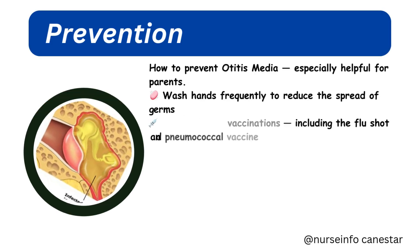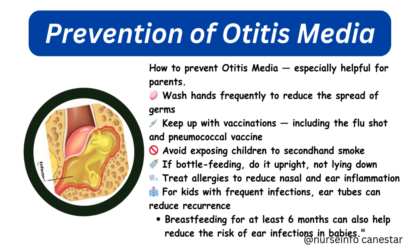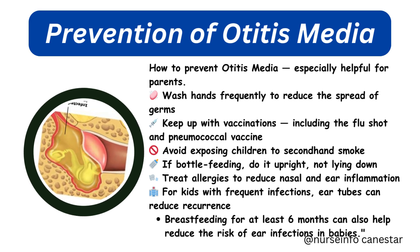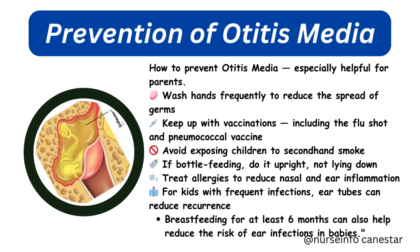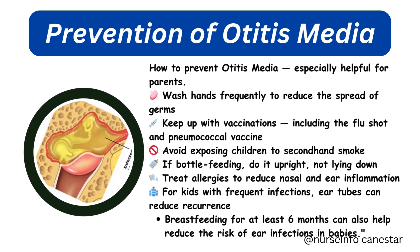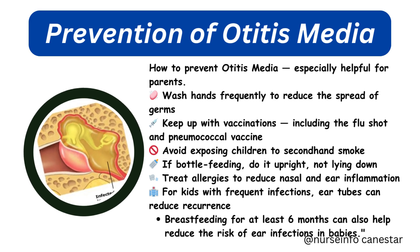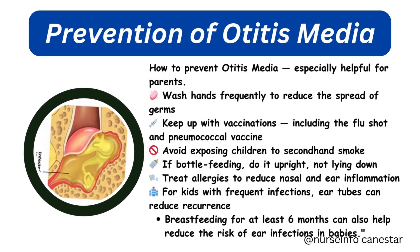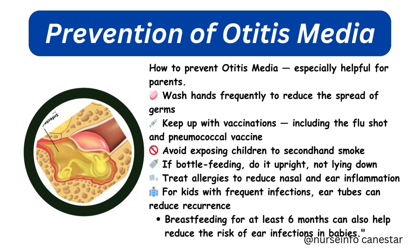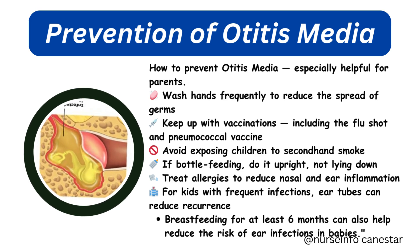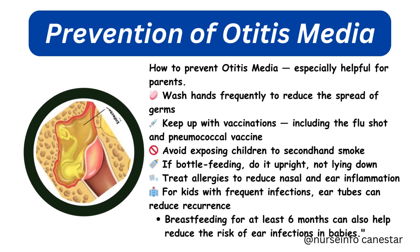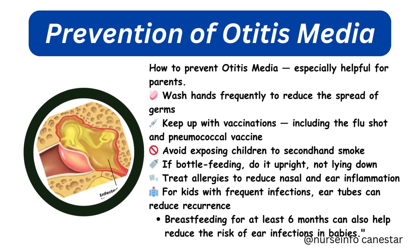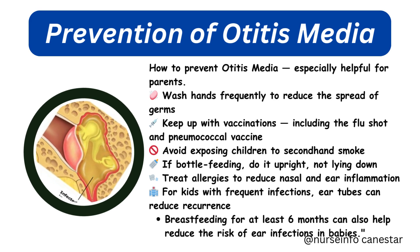Let's talk about how to prevent otitis media, especially helpful for parents. Wash hands frequently to reduce the spread of germs, keep up with vaccinations including the flu shot and pneumococcal vaccine, avoid exposing children to secondhand smoke, and if bottle feeding, do it upright — not lying down. Treat allergies to reduce nasal and ear inflammation. For kids with frequent infections, ear tubes can reduce recurrence, and breastfeeding for at least 6 months can also help reduce the risk of ear infections in babies.